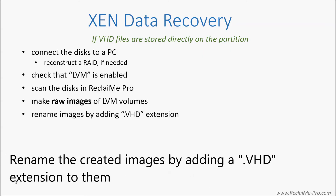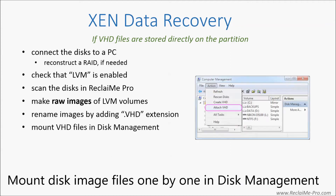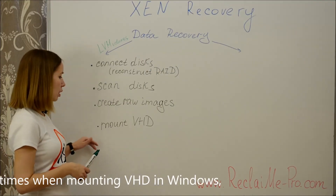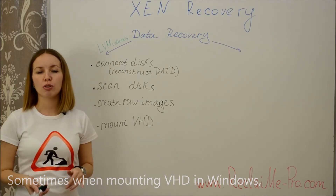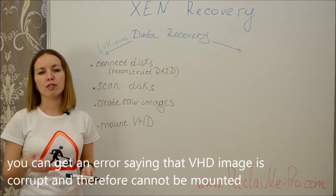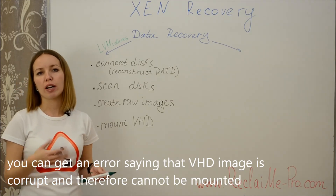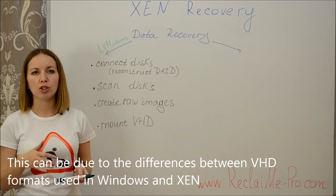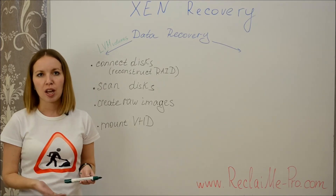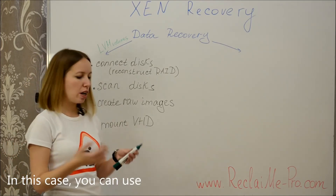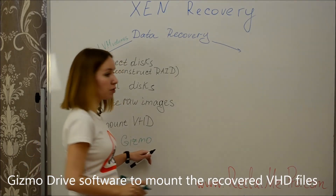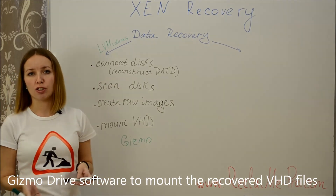Rename the created images by adding a VHD extension to them. Then mount the disk image files one by one in disk management. Sometimes when mounting VHD in Windows, you can get an error saying that the VHD image is corrupt and therefore cannot be mounted. This can be due to differences between VHD formats used in Windows and in Xen. In this case, you can use Gizmo Drive software to mount the recovered VHD files.